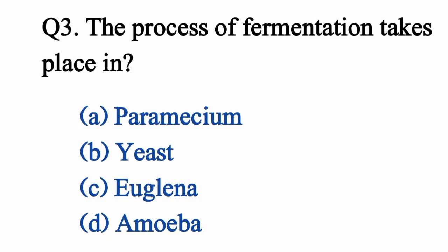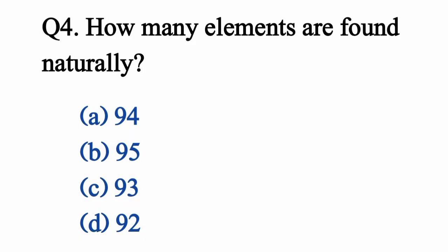Question 3: The process of fermentation takes place in... Correct option B: Yeast. Question 4: How many elements are found naturally? Correct option A: 94.